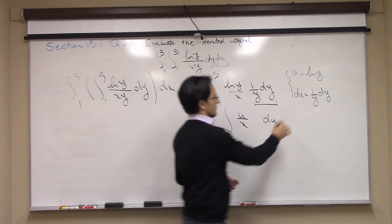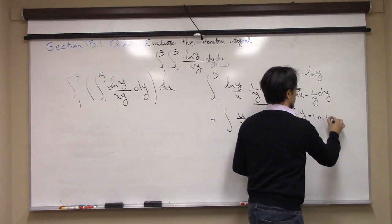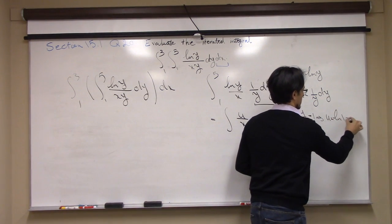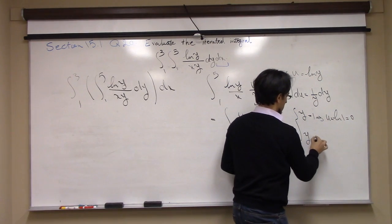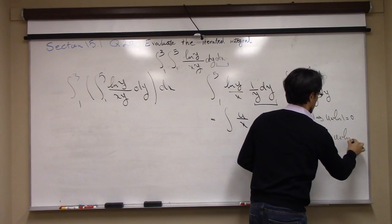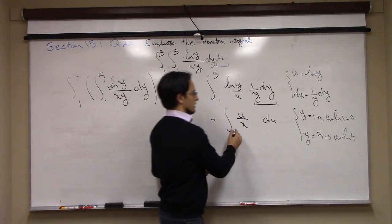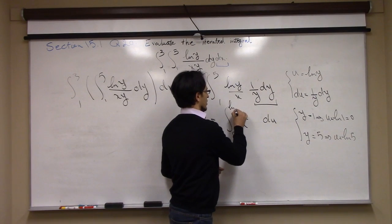If y is 1, then u which is ln 1 is 0. If y is 5, then u is ln 5. So in the new integral, I go from 0 to ln 5.